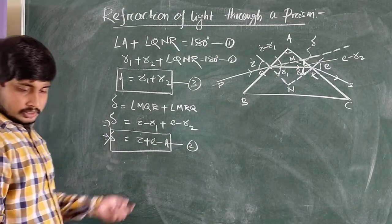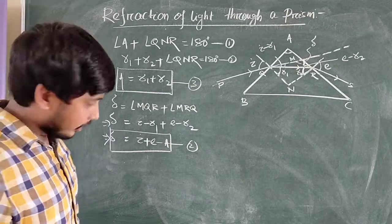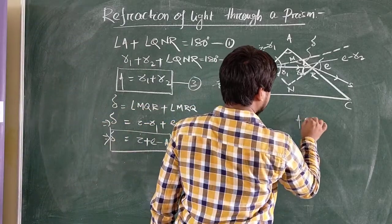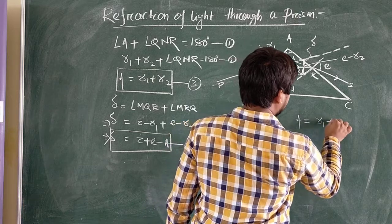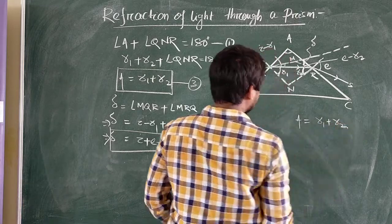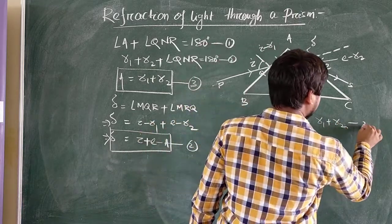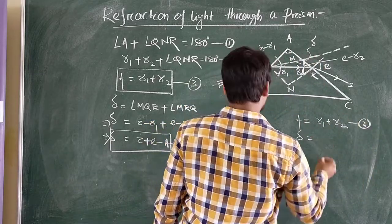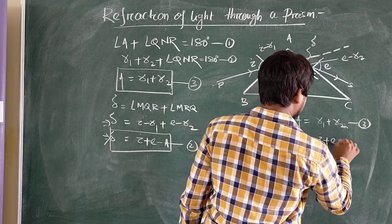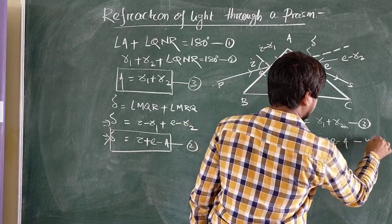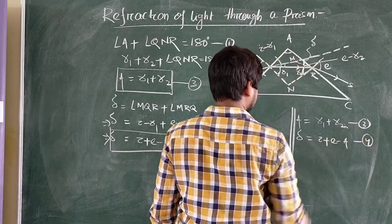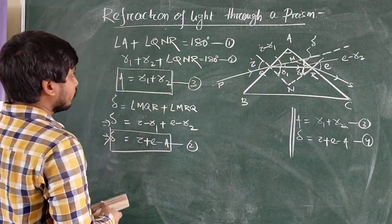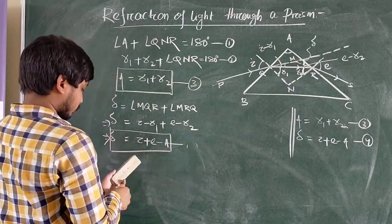So these are our two required equations: equation 3 is A equals R1 plus R2, and equation 4 is delta equals I plus E minus A.